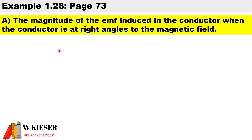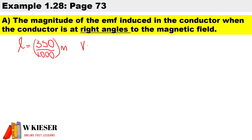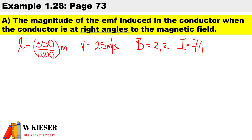The first thing we need to calculate is the magnitude of the EMF induced when the conductor is at right angles to the magnetic field. Writing down what we are given: the length is 350 millimeters — to convert to meters we divide by 1000. The velocity is 25 meters per second, the magnetic field strength is 2.2 tesla, the current is 7 amperes, and the angle is 90 degrees because we are cutting at right angles.